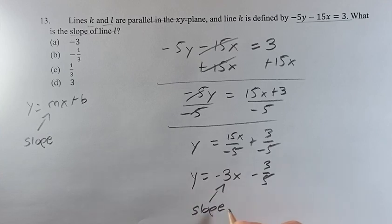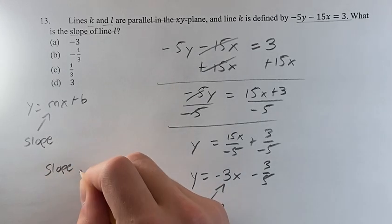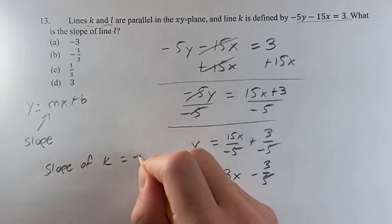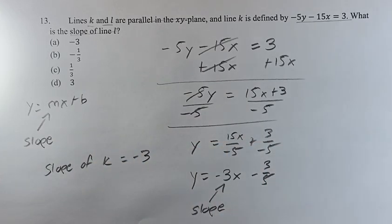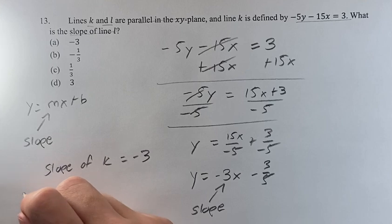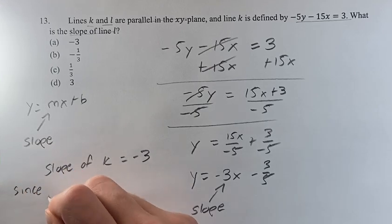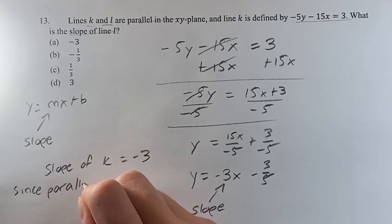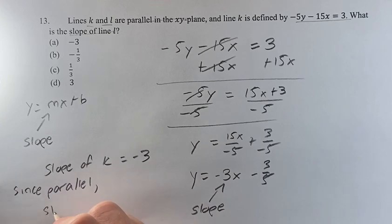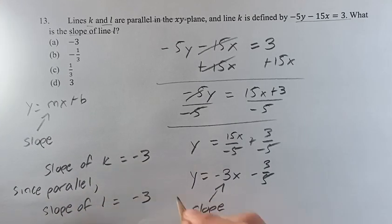Slope, as we found, is that m value. Slope of k is negative 3. Now, since they're parallel, we know that the slope of line l is also negative 3 because these two are equal. Slope of line l is negative 3.